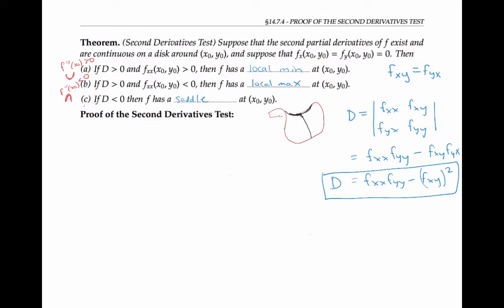It can happen that the discriminant D equals zero at (x₀, y₀). If this happens, the second derivative test is inconclusive — no conclusion can be drawn. Please note that when applying the second derivatives test, we evaluate the discriminant at the critical point (x₀, y₀).